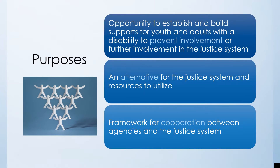The creation of an individual justice plan is an opportunity to establish and build supports for youth and adults with a disability and to prevent or address further involvement in the justice system. An IJP creates an alternative for the justice system and establishes resources to support the disability-related needs of the person. The IJP also provides a framework for cooperation between agencies in the justice system.